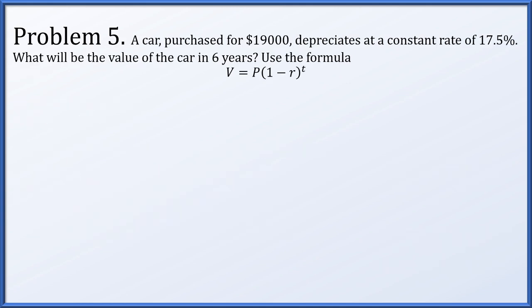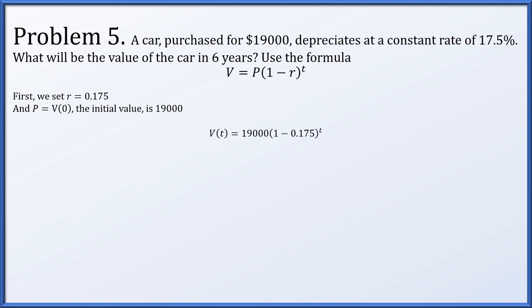Problem 5. A car purchased for $19,000 depreciates at a constant rate of 17.5% per year. What will be the value of the car in six years? Use the formula v equals p times (1 minus r) to the t. We know r is 17.5% or 0.175, and p is $19,000. So the value after t years is 19,000 times (1 minus 0.175) to the t. For six years, we let t equal 6 and compute v(6), which works out to about $5,990.70. After spending $19,000 on a car, six years later it's worth about $6,000 — pretty typical for car depreciation.